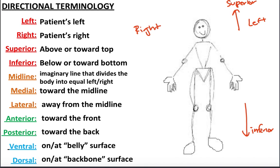Another term is the midline — an imaginary line that goes down and splits the person in half between equal left and right sides, running right over the belly. Something that is medial is closer to the midline compared to something that is further from the midline. It doesn't have to be on the midline; it just has to be closer to the midline than the other thing. And anything further from the midline is lateral.